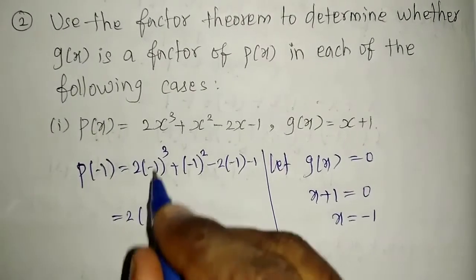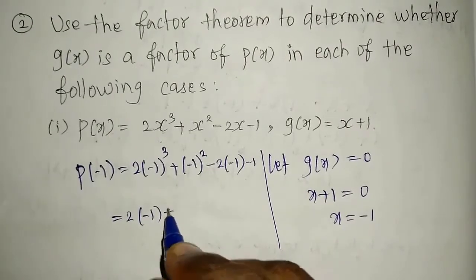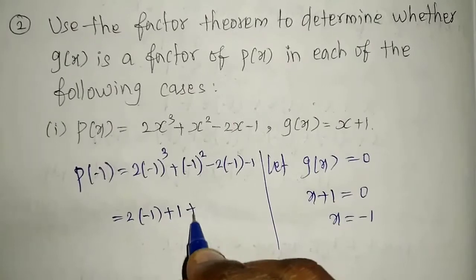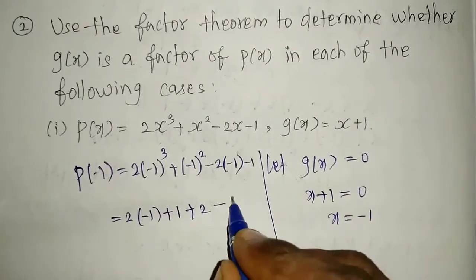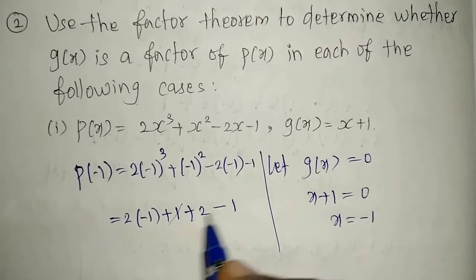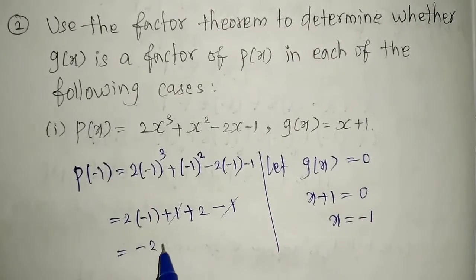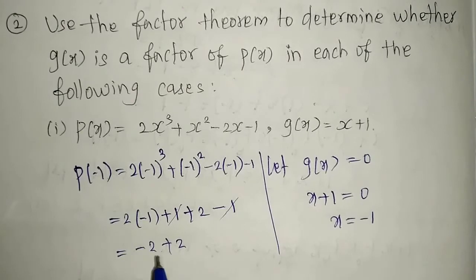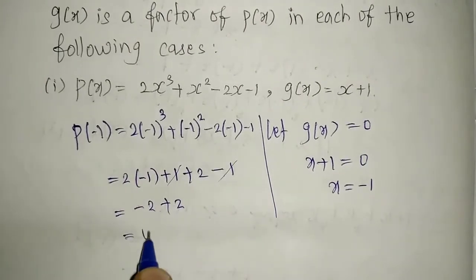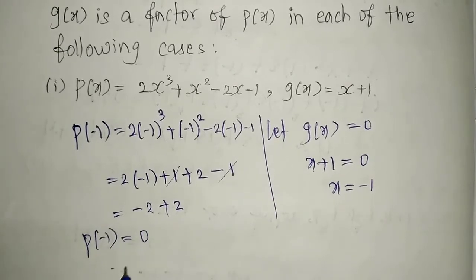2 into minus 1 cubed gives minus 1, plus minus 1 squared gives plus 1, then minus into minus gives plus 2, and finally minus 1. Now plus 1 and minus 1 cancel. 2 into minus 1 gives minus 2, and plus 2 cancels with minus 2. So the remaining answer is 0.